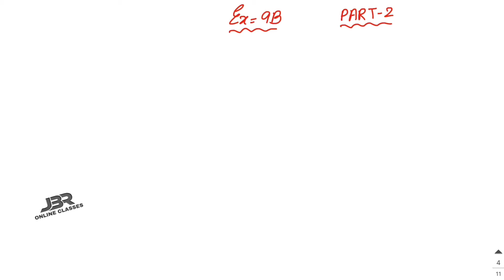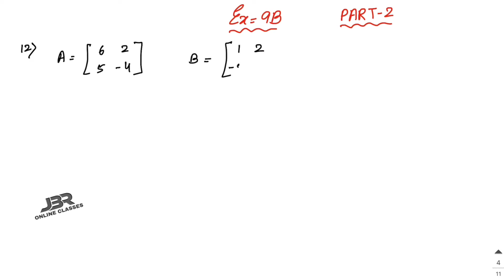In sum number 12, matrix A is [6, 2; 5, -4] — a 2×2 matrix. Matrix B is [1, 2; -5, 1]. Find a matrix X such that 2A + 3B - 5X = 0.